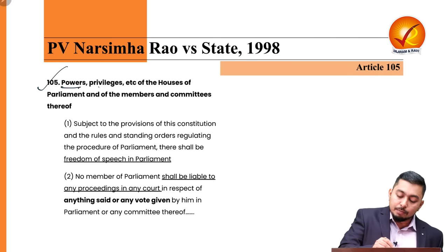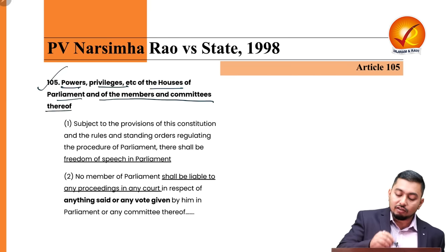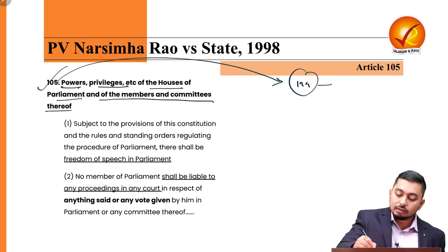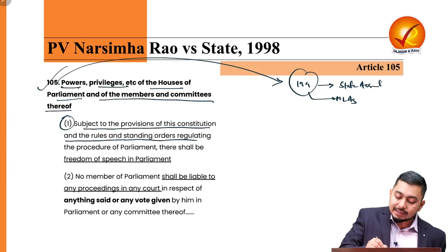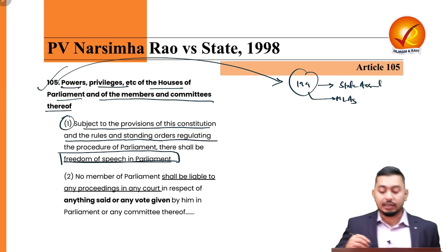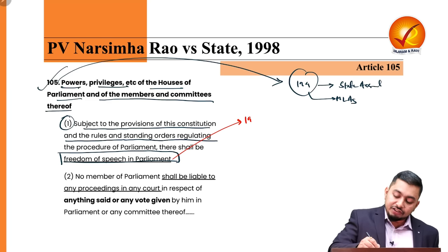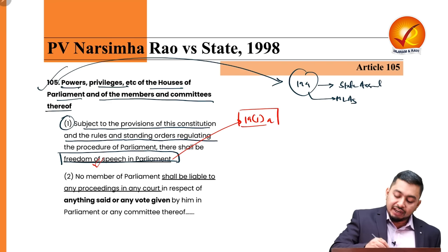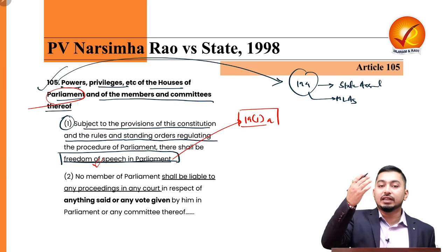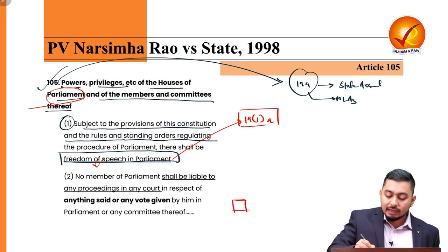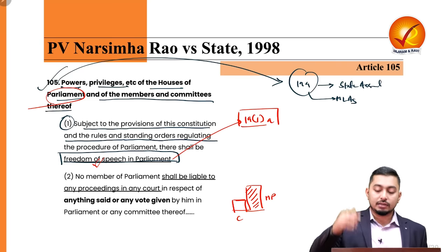Article 105 deals with powers and privileges of the House of Parliament and its members and committees. Article 194 parallelly covers state assemblies and MLAs. Article 105(1) reads: subject to the provisions of this Constitution and the rules and standing orders regulating procedure of Parliament, there shall be freedom of speech in Parliament. The freedom of speech that an MP has is at a higher pedestal than the fundamental right of speech under Article 19(1)(a) — MPs have broader speech rights.